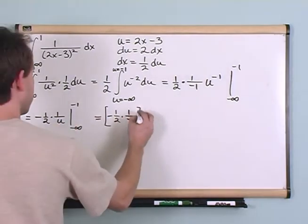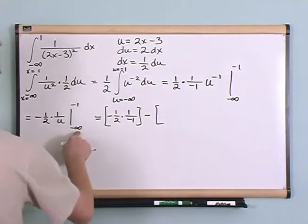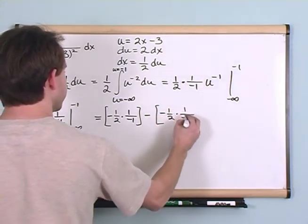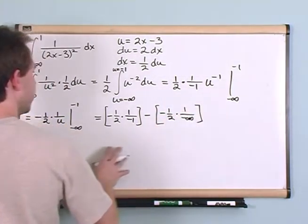We just plug this in here, minus evaluate it at the bottom, which is negative one-half times one over negative infinity. Like this.